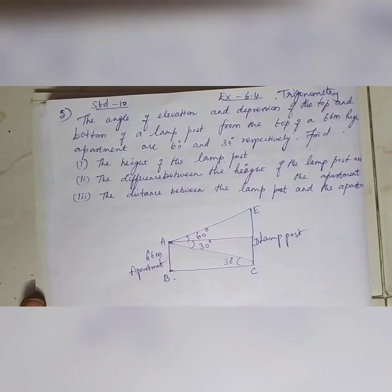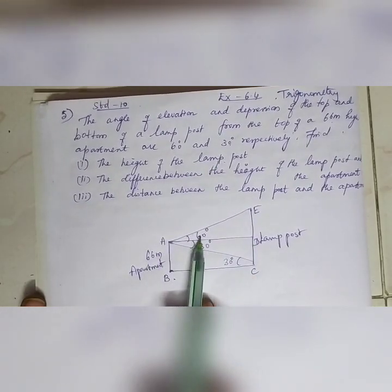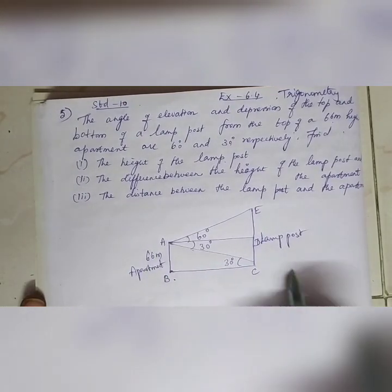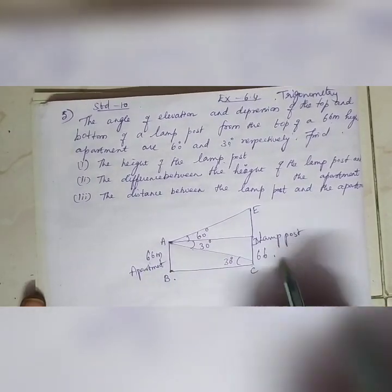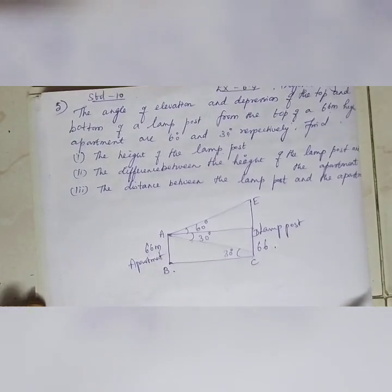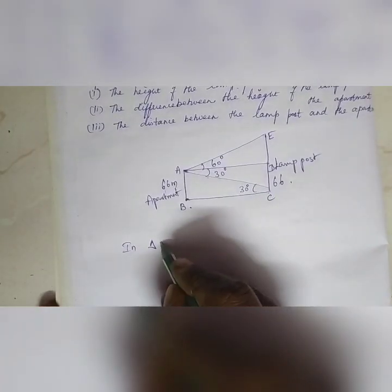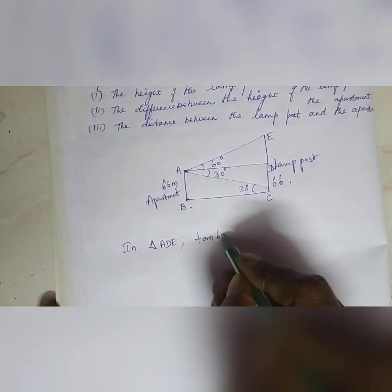We now set up our triangles. The 60 degree triangle is A, D, E. The 30 degree triangle is A, B, C. In triangle ADE, tan 60 degrees is equal to the opposite side divided by the adjacent side, which is DE divided by AD.